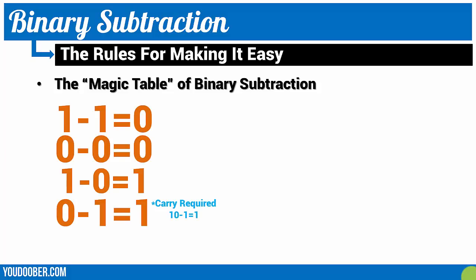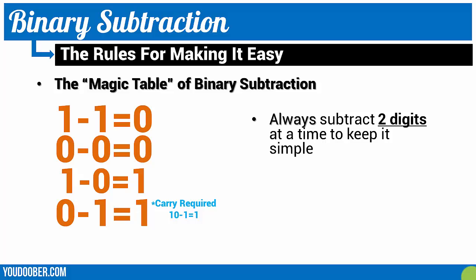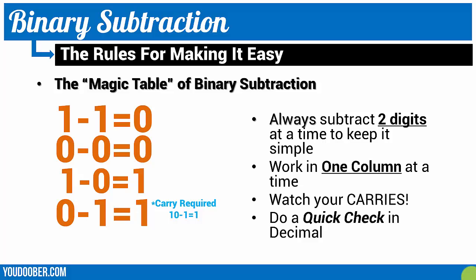1 minus 1 equals 0. 0 minus 0 equals 0. 1 minus 0 equals 1. And 0 minus 1 equals 1, and when you see that, there's going to be a carry that's required. We're always going to subtract two digits at a time, work in one column at a time, watch our carries, and at the end, do a quick check in decimal.